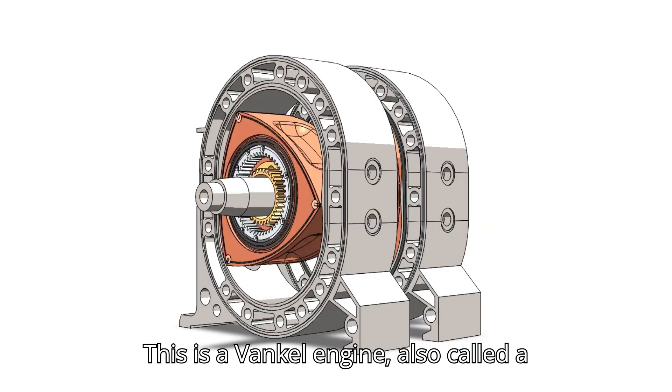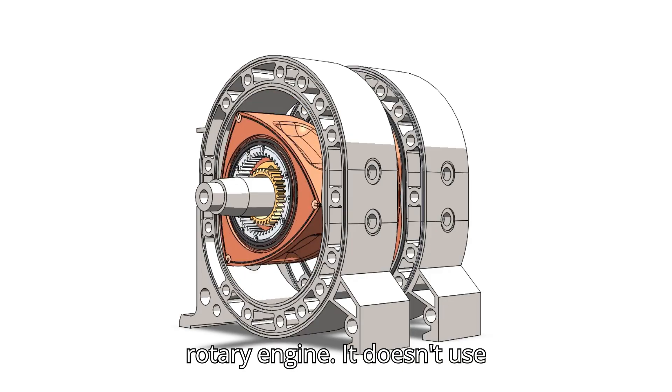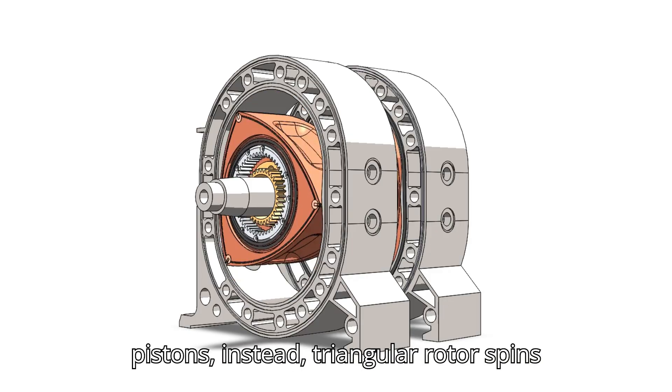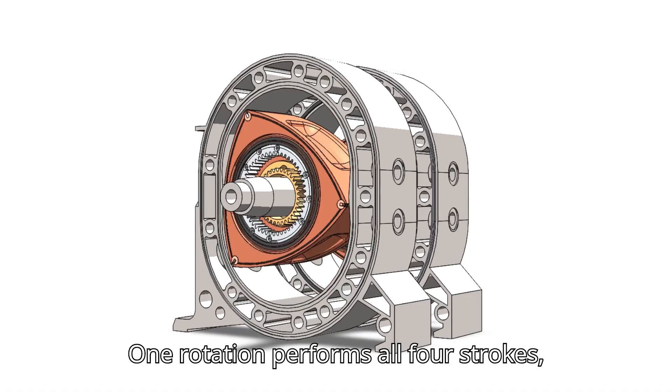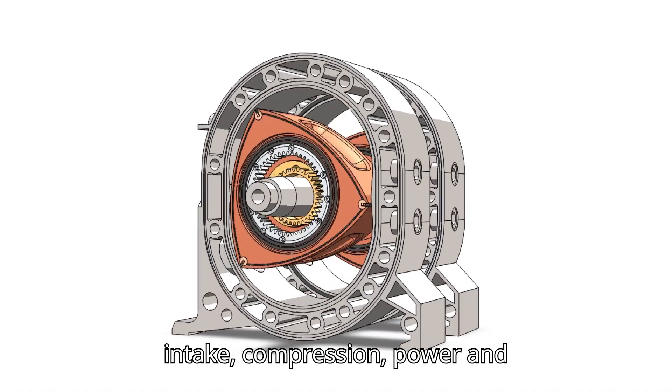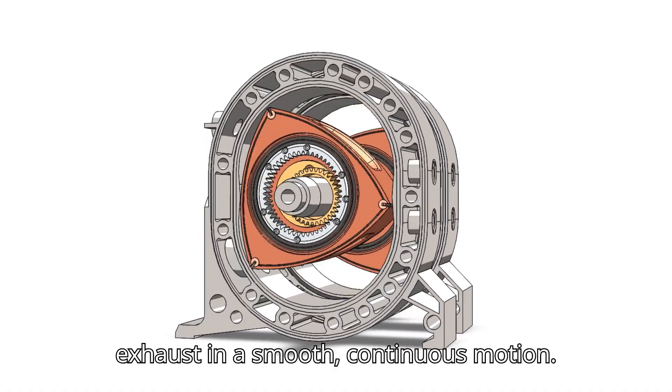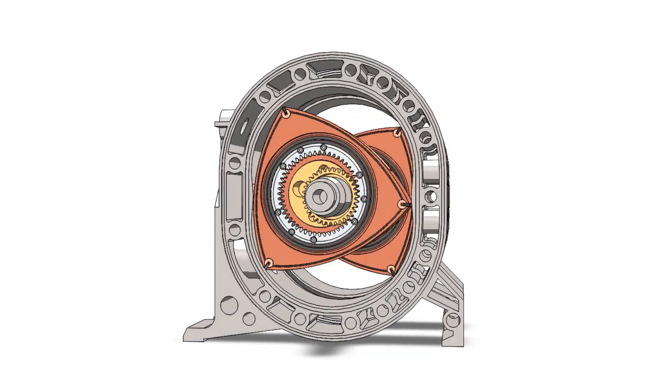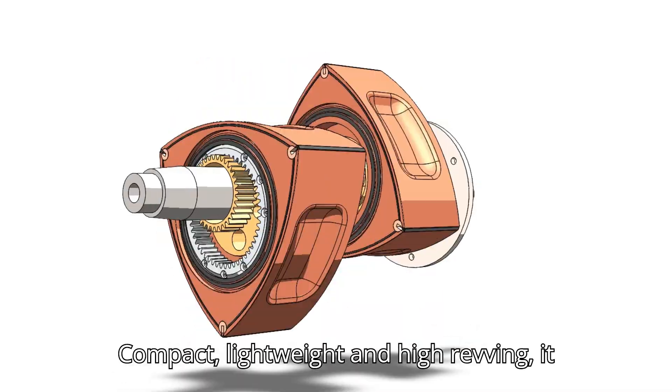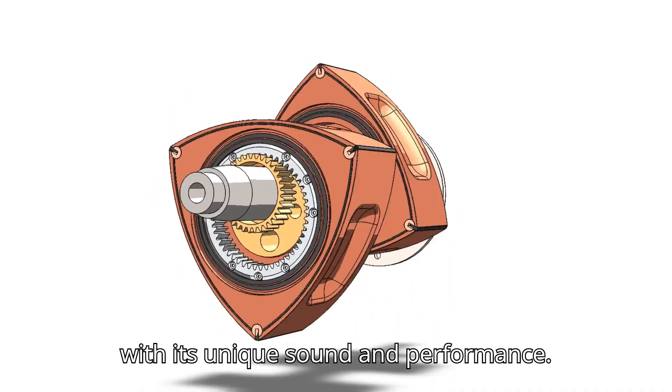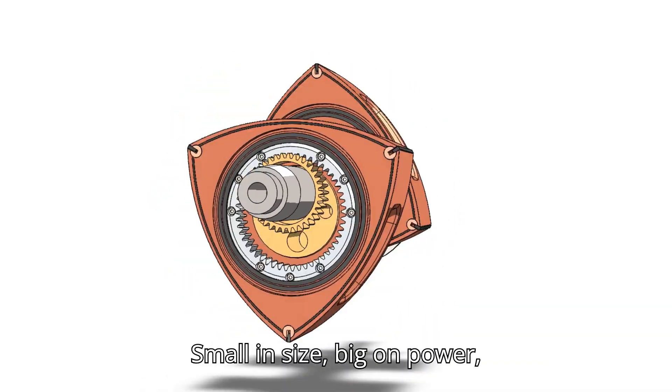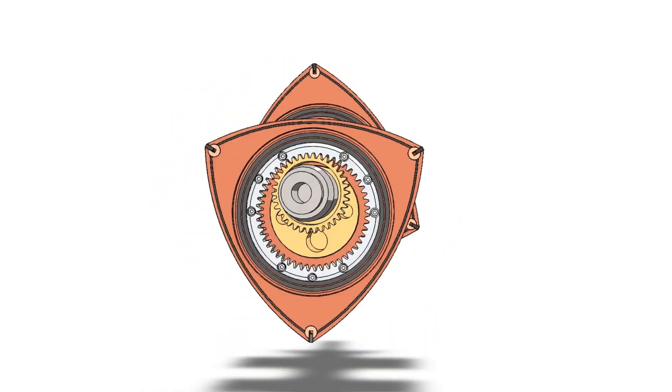This is a Wankel engine, also called a rotary engine. It doesn't use pistons, instead a triangular rotor spins inside an oval-shaped chamber. One rotation performs all four strokes: intake, compression, power and exhaust, in a smooth, continuous motion. Compact, lightweight and high revving, it powered legends like the Mazda RX series with its unique sound and performance. Small in size, big on power.